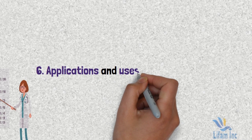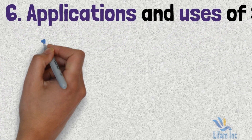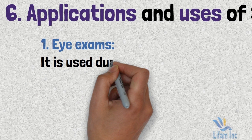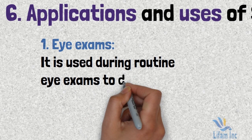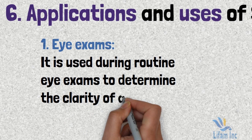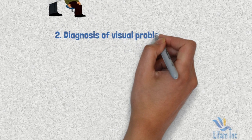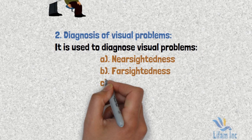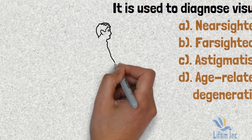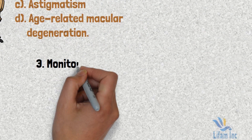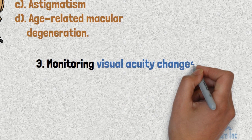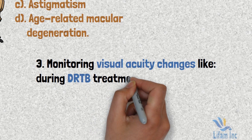The applications of the Snellen chart include: eye examination in an eye clinic, where it is used during routine eye examination to determine the clarity of a person's visual acuity; and diagnosis of visual problems such as age-related macular degeneration.